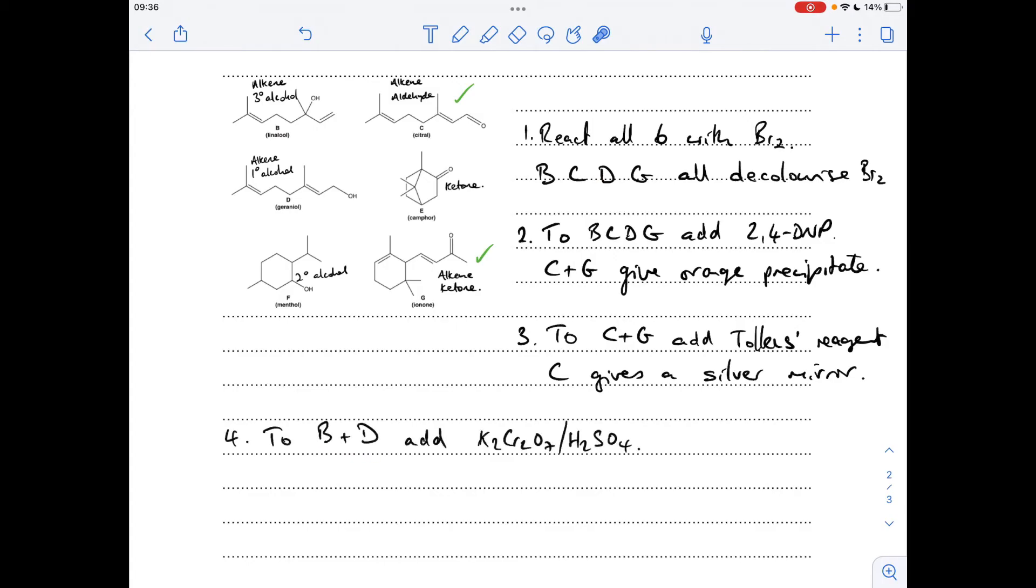So to B and D then, I'm going to add acidified potassium dichromate, or you could just write the ion, Cr2O7 2- slash H+. Remember, B is a tertiary alcohol, and D is a primary alcohol. Tertiary alcohols can't be oxidised, whereas primary alcohols can. So D will give that orange to green colour change. B, it'll stay orange. So that means B and D are now identified.